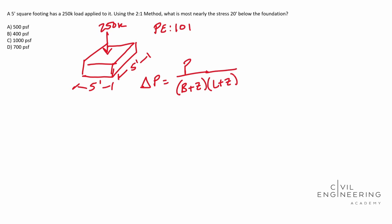So if we're going to plug and chug here, we're going to have 250 kips over that. Keep your units. They're important. B plus Z, that is going to be 5 feet plus 20 feet times 5 feet plus 20 feet. And so if you solve that out, you end up with 0.4 kips per foot.